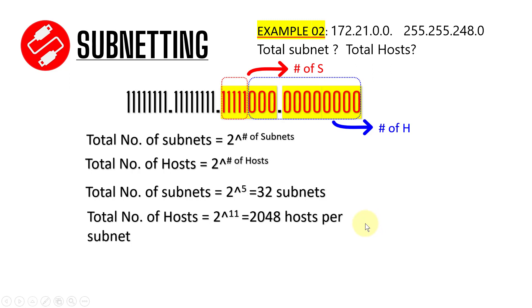So the equation gives us 2^5 subnets and 2^11 = 2048 hosts per subnet. This is how you find the total number of subnets or networks from an IP address and the total number of hosts per subnet. I hope this explanation was clear for everybody. If you liked it, hit a like and share it. If you have any questions, drop a comment and I will try to answer as soon as possible. See you in my next video, goodbye.